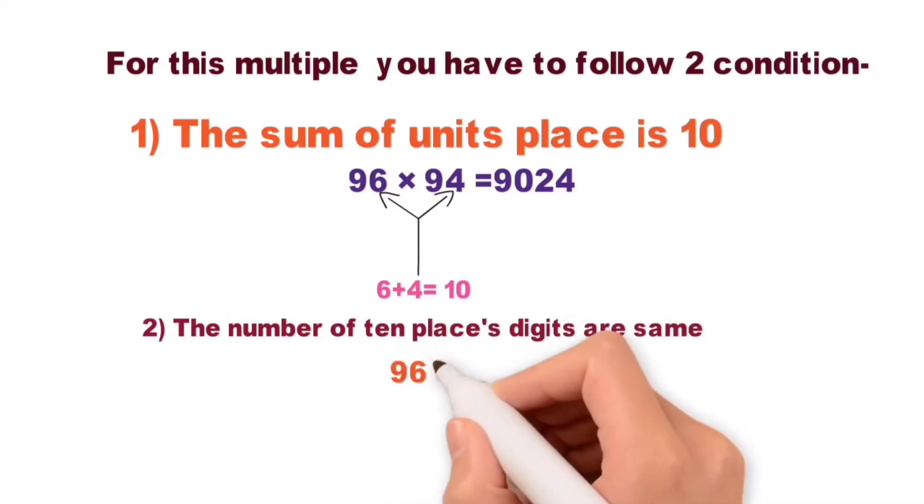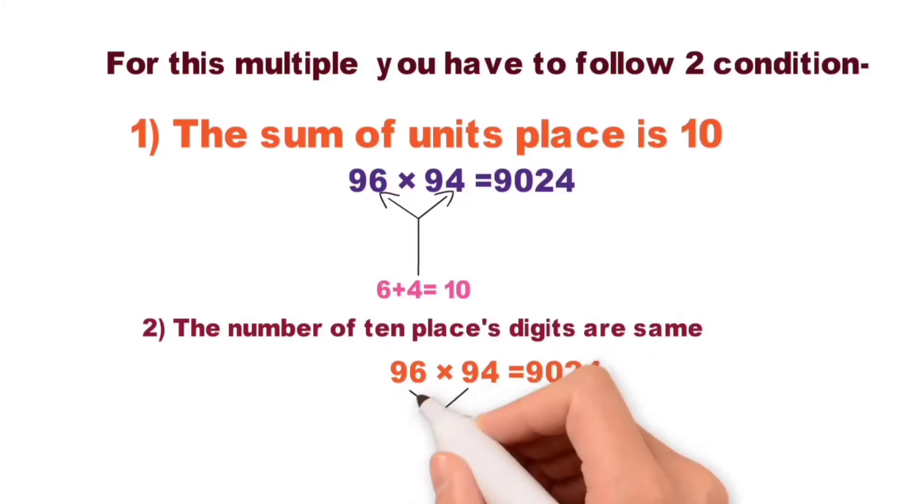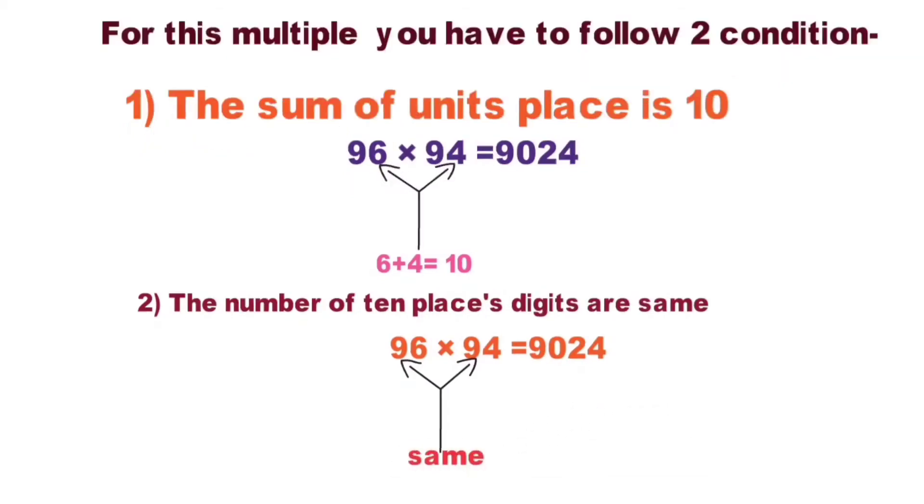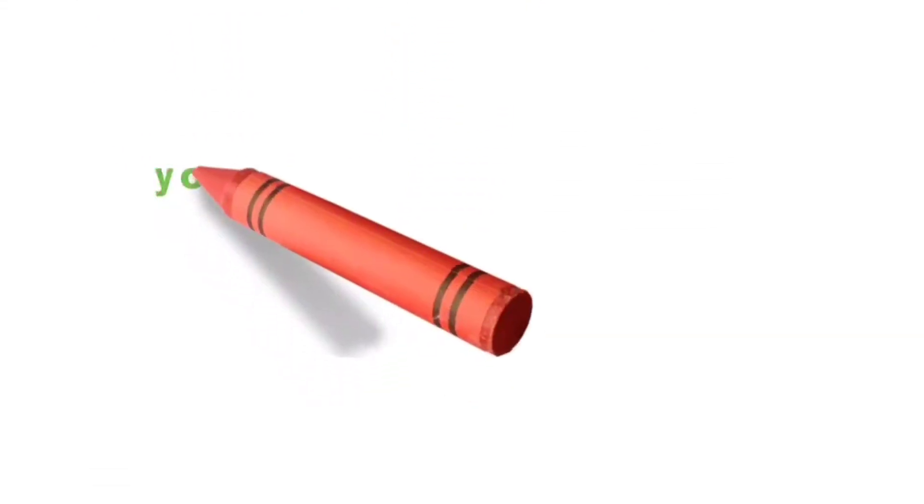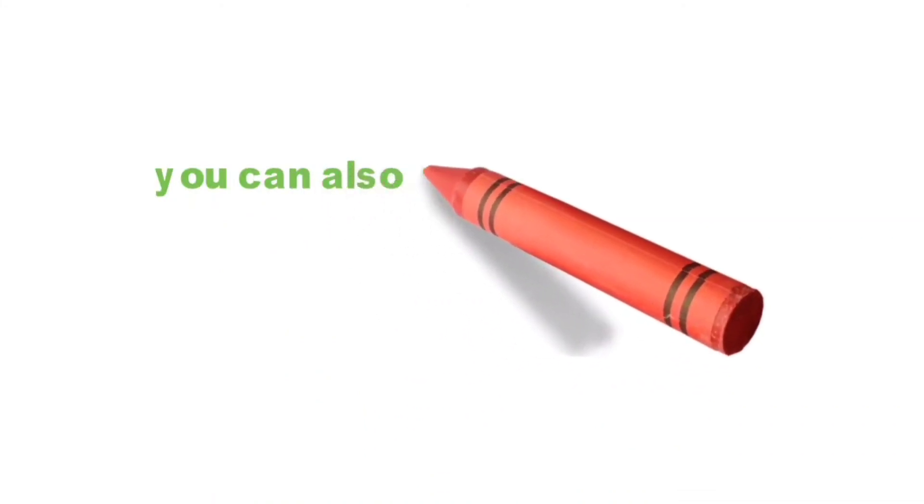Number two: the number of tens place digits are same. Example, here both tens place digits are 9, that is same number.